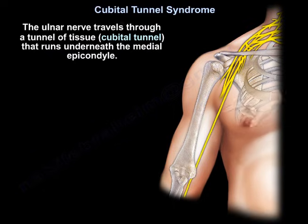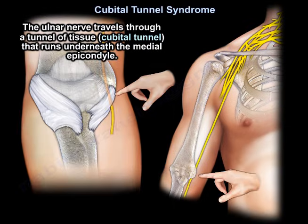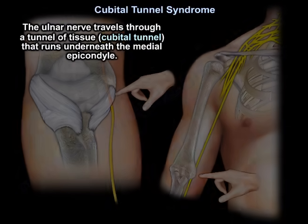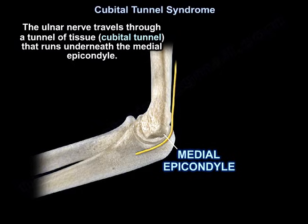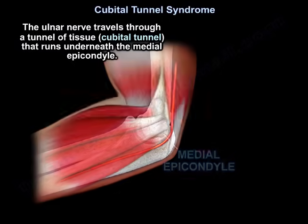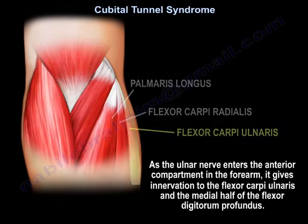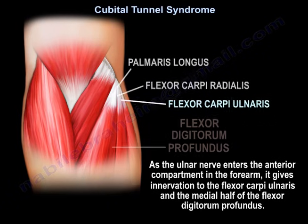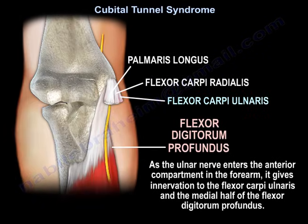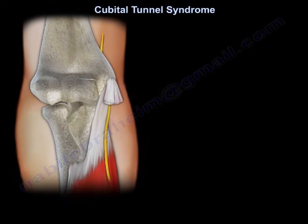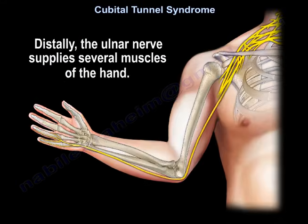The ulnar nerve travels through a tunnel of tissue, the cubital tunnel, that runs underneath the medial epicondyle. As the ulnar nerve enters the anterior compartment in the forearm, it gives innervation to the flexor carpi ulnaris and the medial half of the flexor digitorum profundus. Distally, the ulnar nerve supplies several muscles of the hand.